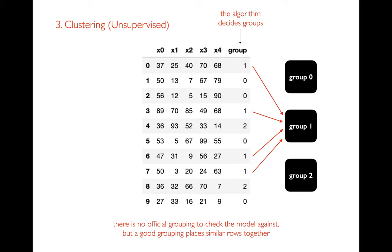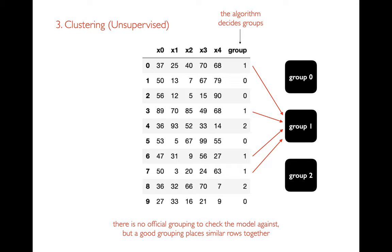You can imagine lots of different reasons to do this clustering. Maybe each of these things represents a different user for my web application, and if I can say there are 10 different kinds of web users, I could run a different marketing campaign for each group. Clustering is unsupervised because there's no label column I'm trying to predict.